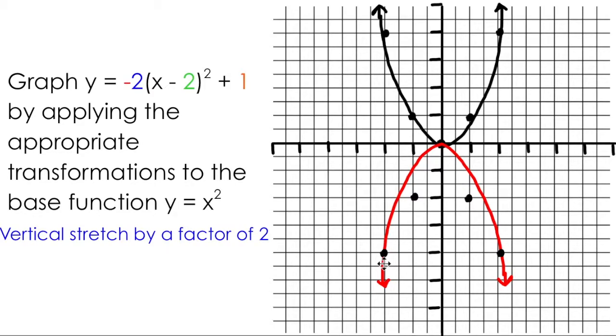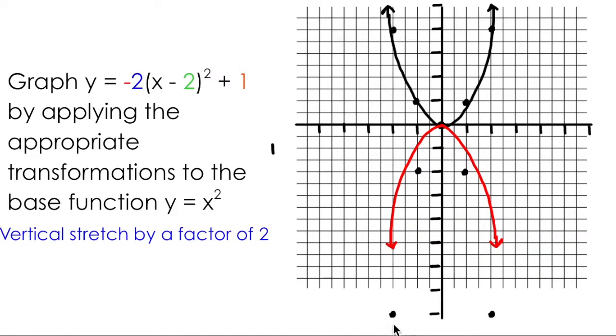These two points are both at negative 4. Multiplying both of the y values here by 2 results in negative 8 for each of them. The reflected and vertically stretched parabola is shown here in blue.